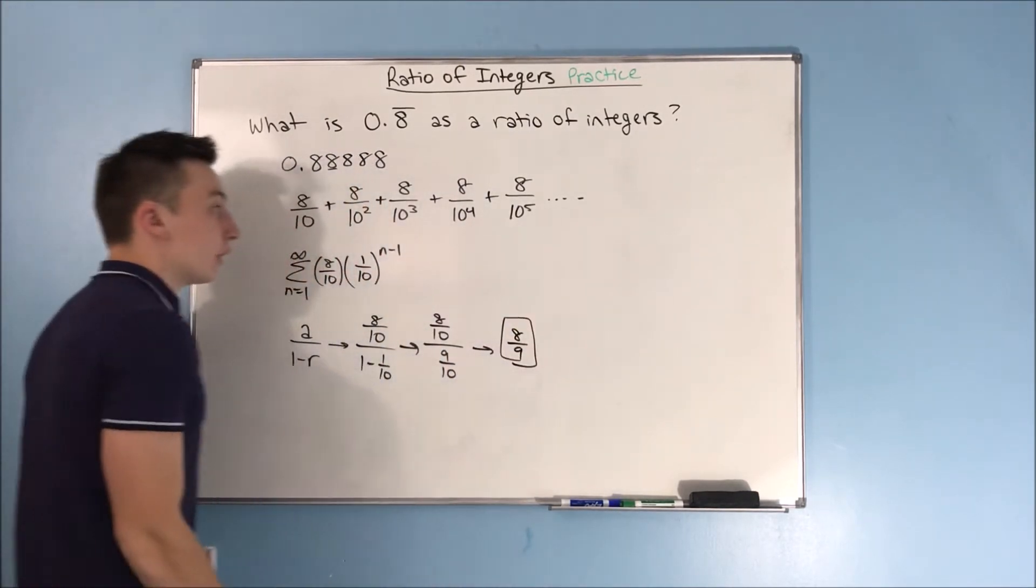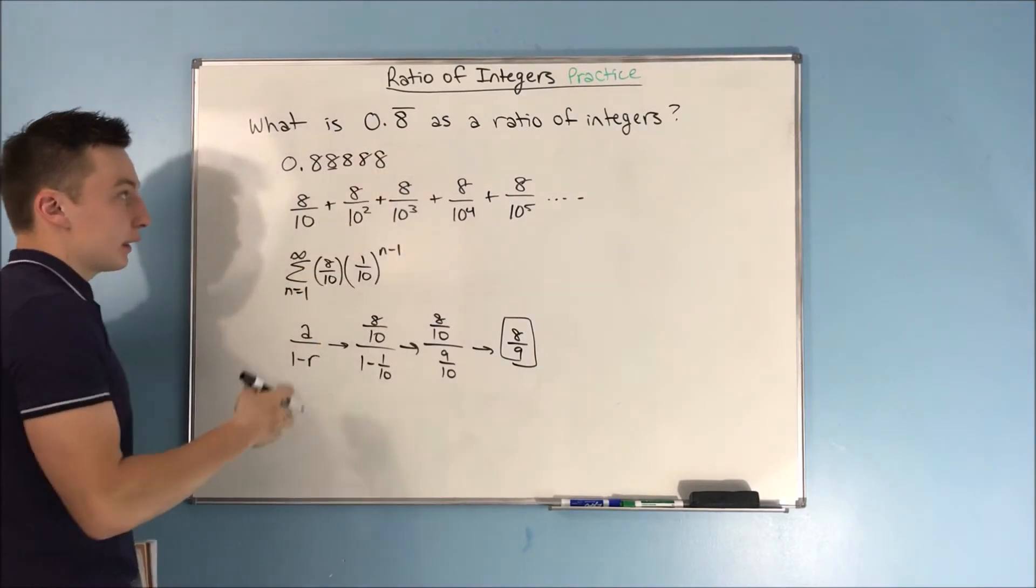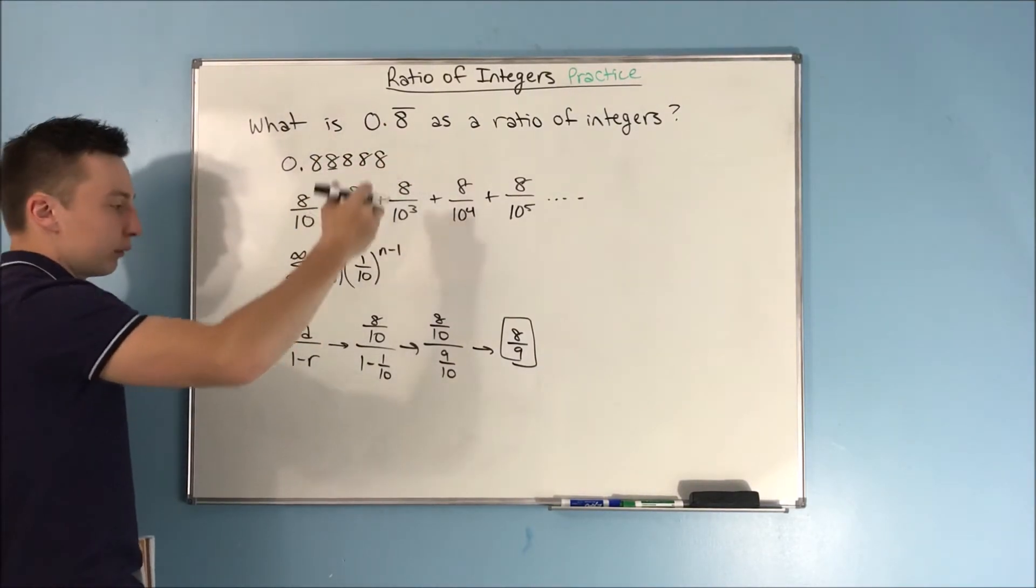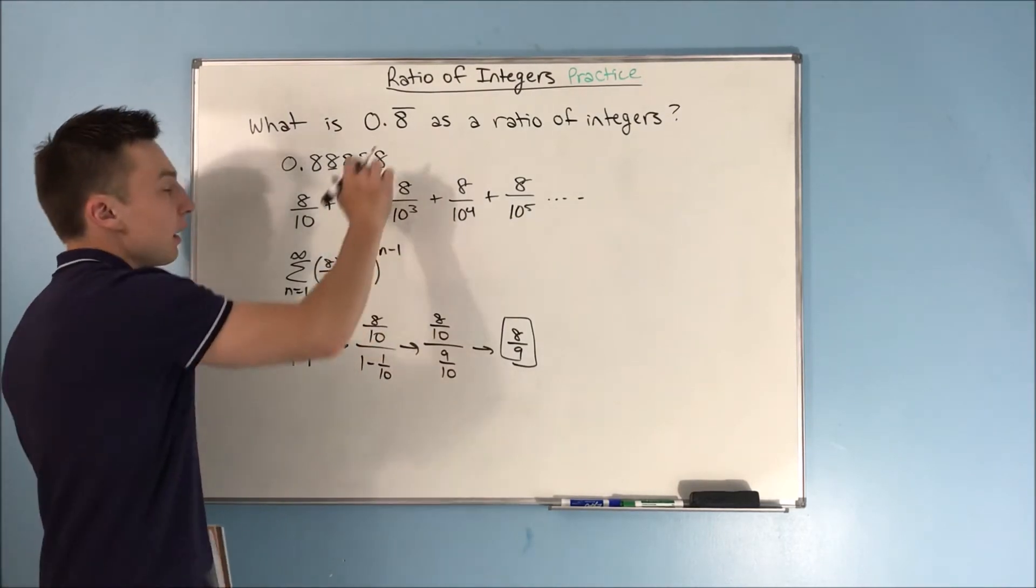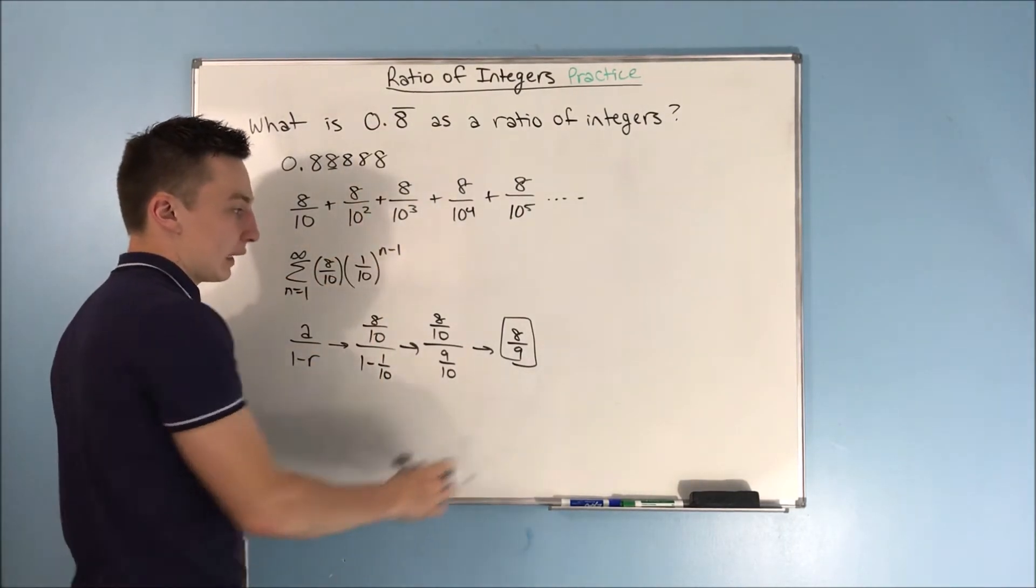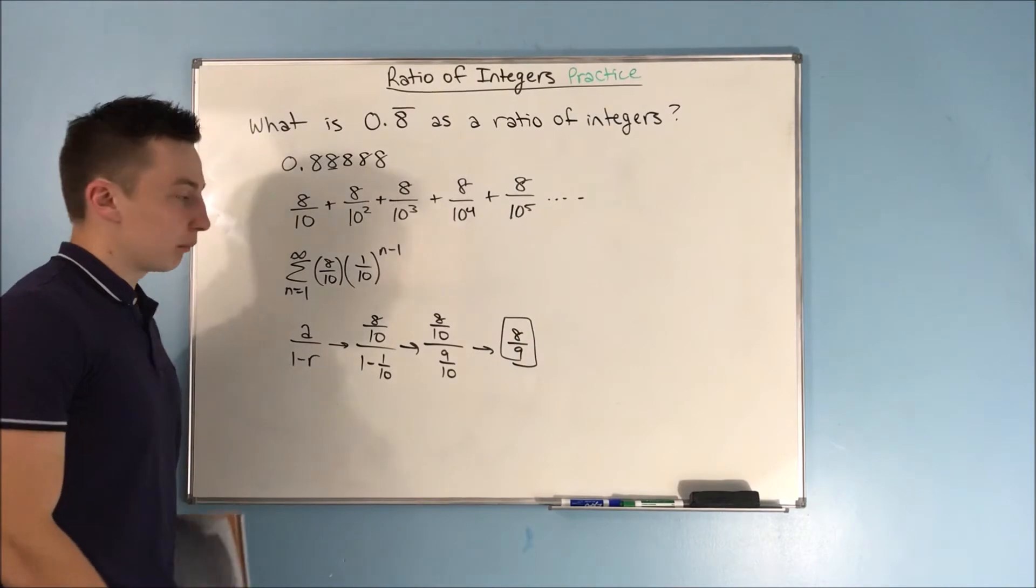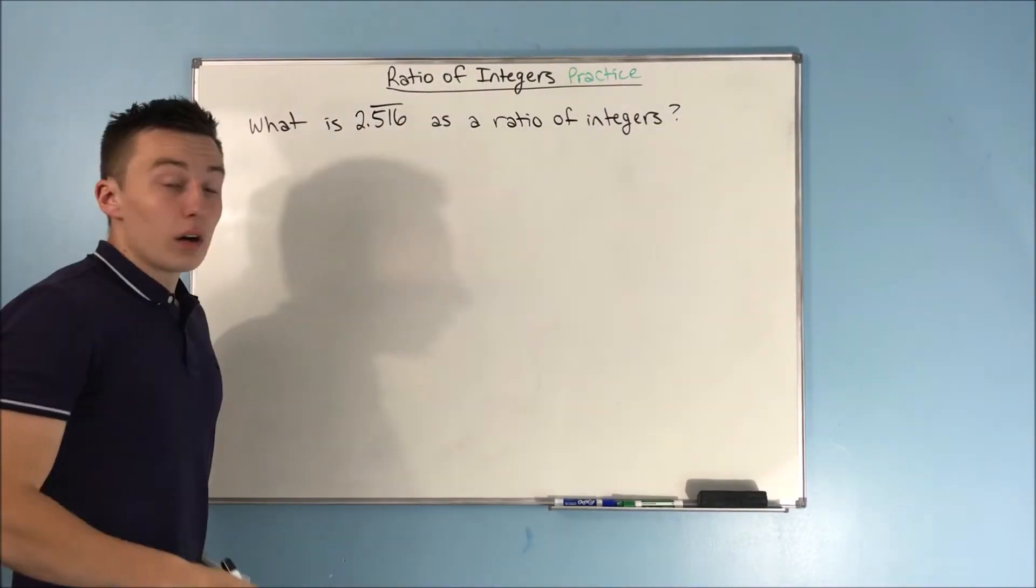So, 0.8 repeating is the same thing as 8 over 9. We expressed this repeating decimal as a ratio of integers.